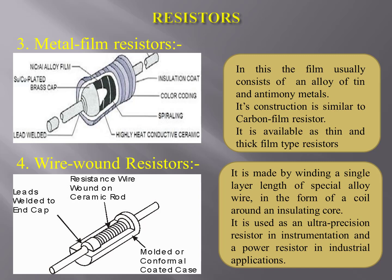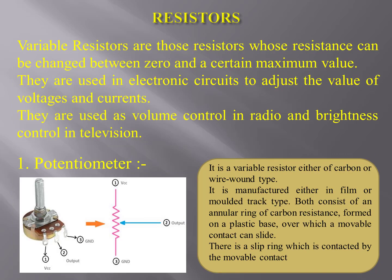Wire wound resistor: it is made by winding a single layer length of special alloy wire in the form of a coil around an insulating core. It is used as an ultra-precision resistor in instrumentation and as a power resistor in industrial applications.